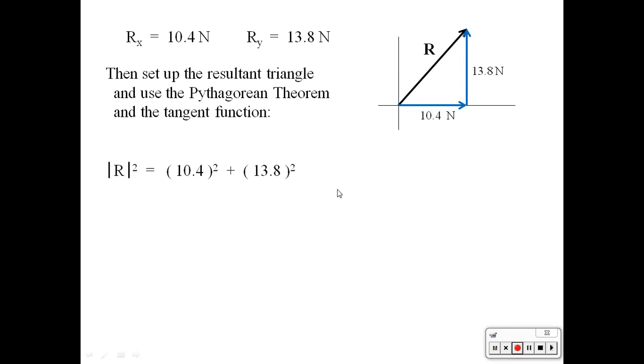First, find the magnitude. Magnitude of R squared is equal to one leg squared plus the other leg squared. And it turns out to have a magnitude of 17.3. To find the angle, the angle here at the origin, we can use the tangent function. Tangent equals opposite over adjacent, 13.8 over 10.4, which happens to be 1.33. And then taking the inverse tangent of 1.33, it's 53.0 degrees.